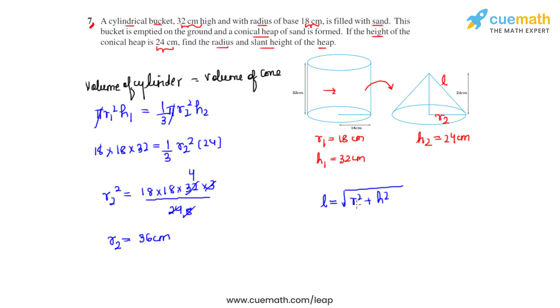So in here it can be r2² and h2², because r2 represents the radius of the conical heap and h2 represents the height of the conical heap.